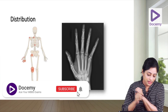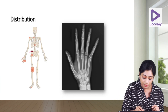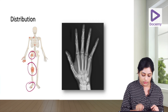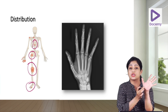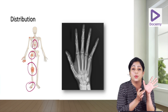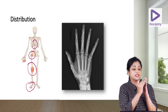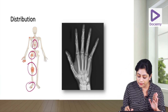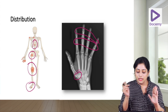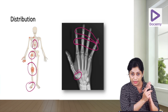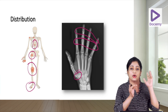Osteoarthritis mainly affects weight-bearing joints such as the hip, knee, foot, and spine. Importantly, the hands are also involved — the most common site in the hand is the first carpometacarpal joint, important for MCQs. Other joints involved include the DIP (distal interphalangeal) and PIP (proximal interphalangeal) joints. Interestingly, the metacarpophalangeal joints are not involved or are the least involved joints in hand OA.